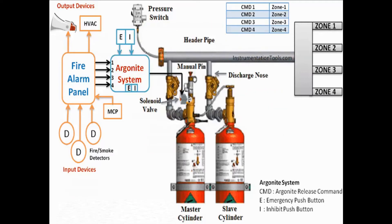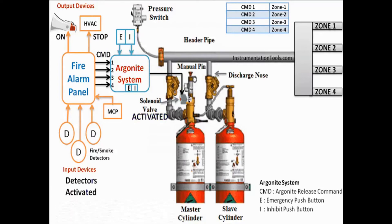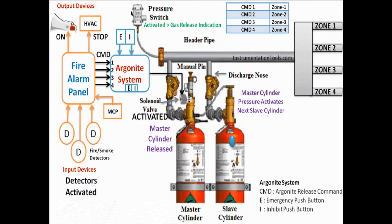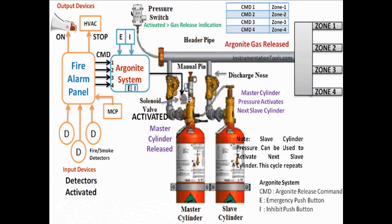If inhibit is not given and after the time delay, the argonite system activates the solenoid valve on the master cylinder. The master cylinder gas is released and has two paths: one is the main discharge line, and the second goes to the next slave cylinder. The master cylinder pressure activates the slave cylinder, which is then released. Similarly, the slave cylinder may also have two paths — the main discharge line or the next slave cylinder. Like this, we can release many cylinders connected in series by activating one master cylinder.